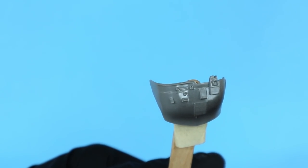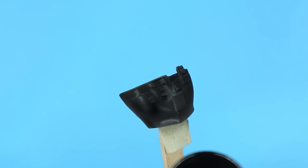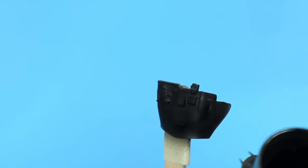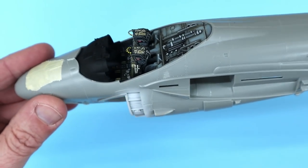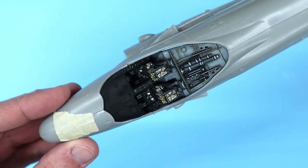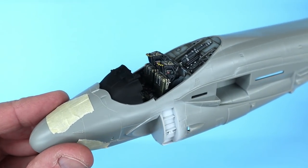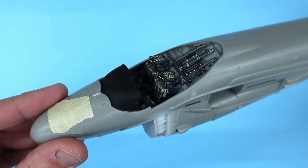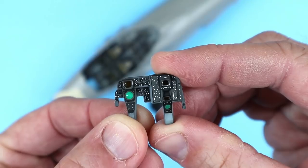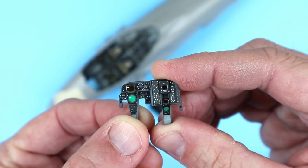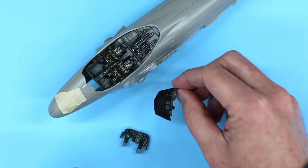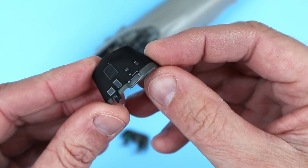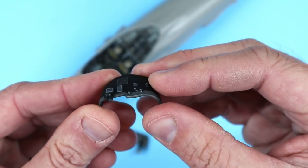Next, I painted the instrument panel combing and instrument panel by first giving everything a coat of Tamiya flat black. I checked the fit of the combing to the fuselage to make sure that everything was going to be able to go together as planned. Just like I had done with the cockpit consoles, I used Vallejo paints to paint the raised details on the instrument panel. I then added drops of five-minute epoxy to the various gauges to simulate the glass bezels.